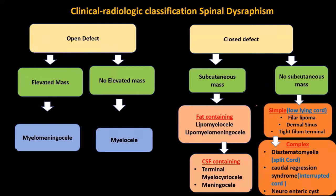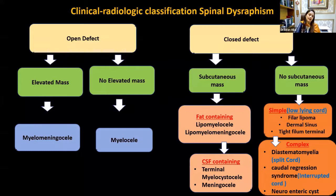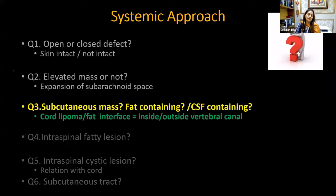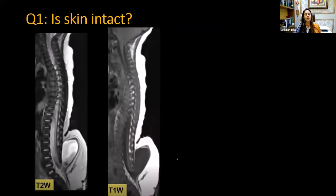Coming back to the clinical radiological classification chart. We have discussed the open defect with and without elevated mass — myelomeningocele and myelocele. Now moving towards the closed defect. In the closed defect, the two main branches are: does the patient have a subcutaneous mass, or no subcutaneous mass? For the closed defect with a subcutaneous mass, the next question is: is that mass fat-containing or CSF-containing?